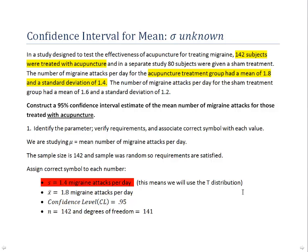We're going to construct a 95% confidence interval, and the steps are exactly the same as in the previous example. We begin by identifying the parameter. In this case, we're studying a mean again — it's a mu — and this mu is the mean number of migraine attacks per day. That's what we're interested in estimating.